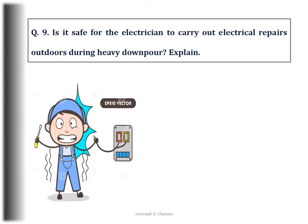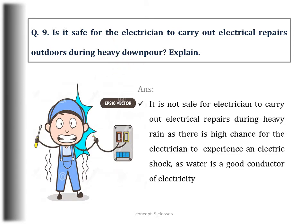Question number 9: Is it safe for an electrician to carry out electrical repairs during heavy rain? No, it is not safe, as there is a high chance for the electrician to experience an electric shock because water is a good conductor of electricity.